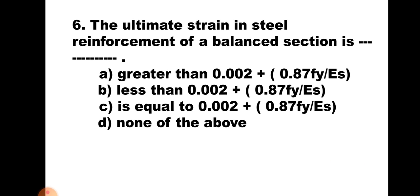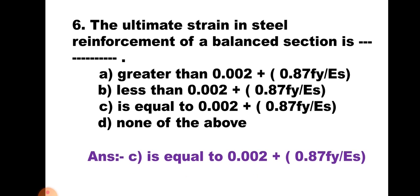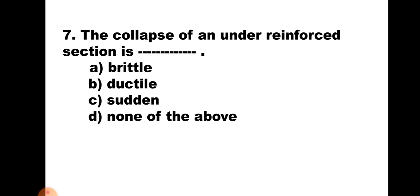Question number 6: The ultimate strain in steel reinforcement of a balanced section is: A. Greater than 0.002 + 0.87FY/ES, B. Less than 0.002 + 0.87FY/ES, C. Equal to 0.002 + 0.87FY/ES, D. None of the above. For a balanced section, both concrete and steel reach their ultimate strain simultaneously, so the ultimate strain in steel equals 0.002 + 0.87FY/ES. The correct answer is C.